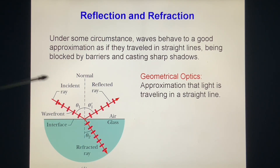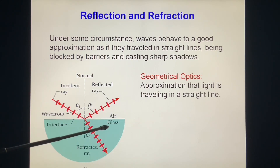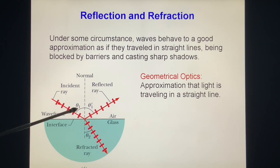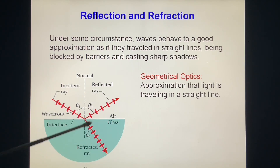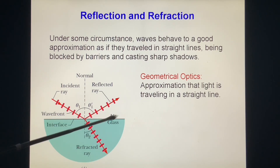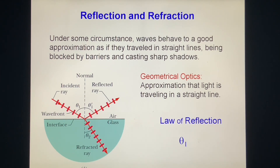This is called the incident ray. On the surface between air and glass — two different media with different indices of refraction — theta 1 is the angle of incidence, theta 1 prime is the angle of reflection, and theta 2 is the angle of refraction. We have the law of reflection: theta 1 prime equals theta 1.